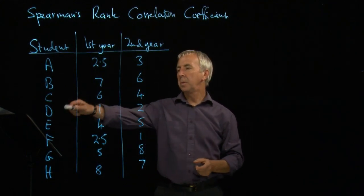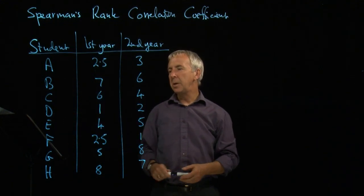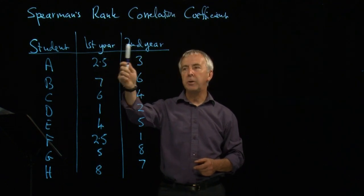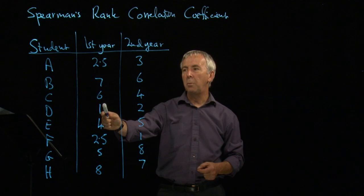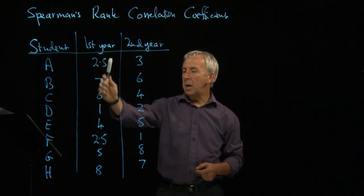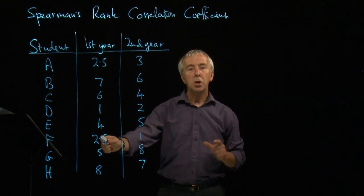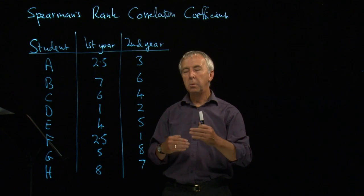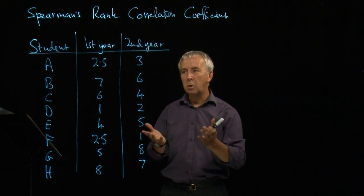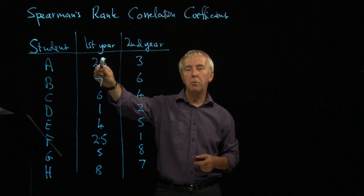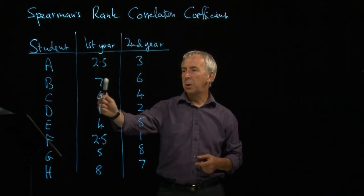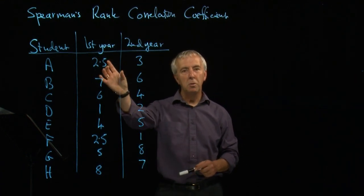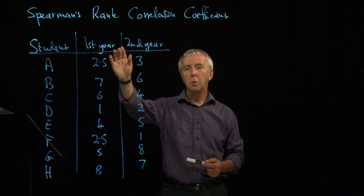So let's look at this example. Here we have eight students, A, B, C, D, up to H, and these are their positions in successive years. At the end of the first year, student D was top. Students A and F shared second place. If they'd been separate, we'd have had second and third. But because they're tied, we split that ranking between them. So we call each of them rank two and a half. E was fourth, G was fifth, and so on. That was at the end of the first year. We don't have their actual scores in their exam results. We just have their positions.